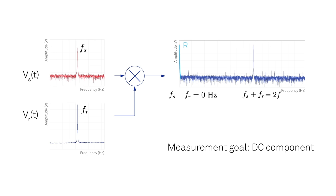After mixing, the lock-in amplifier separates the DC component from the 2f part by means of an adjustable low-pass filter. Main characteristics are the bandwidth and filter order.